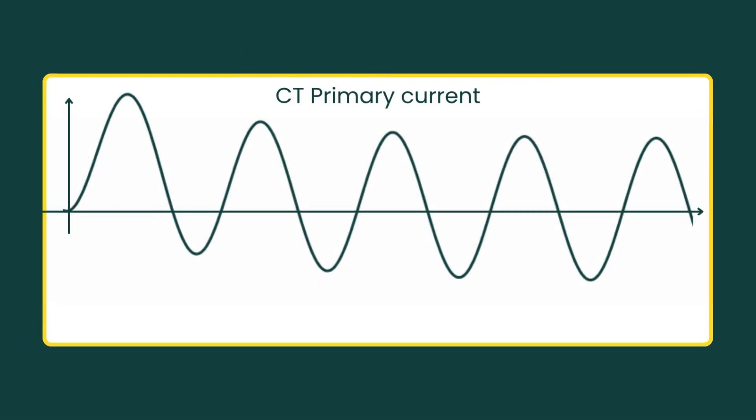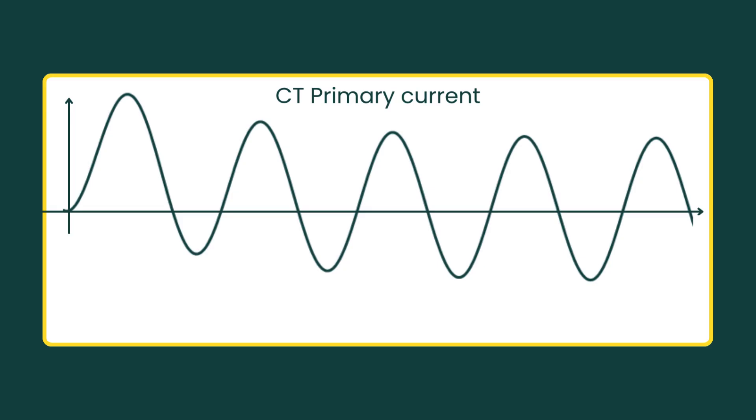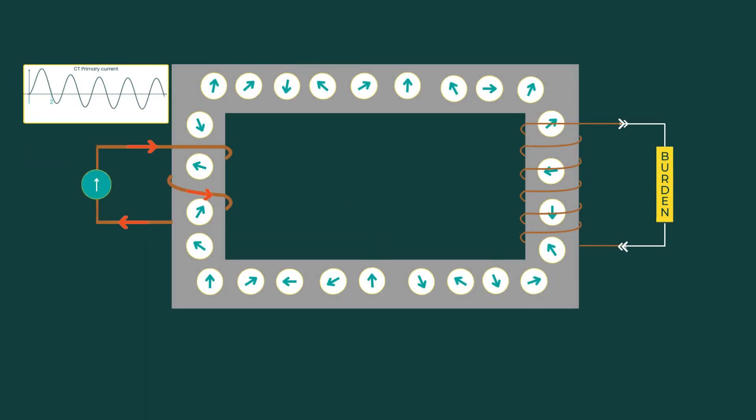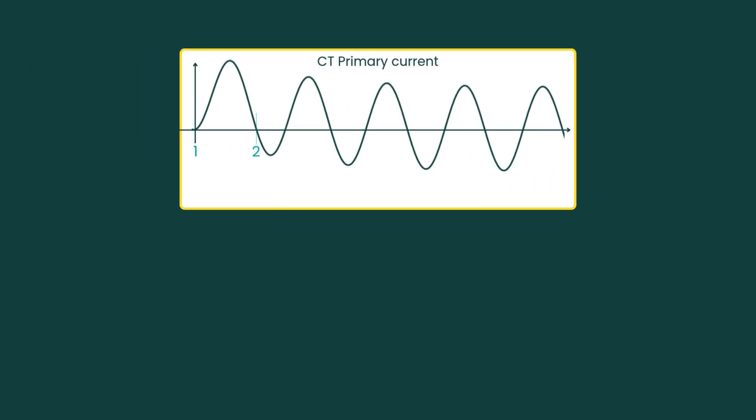Now let's walk through the first few cycles and see what happens inside the CT during those early moments. During the first positive half cycle, from point 1 to point 2, the current is positive and the dipoles in the core begin lining up in the positive direction. The flux is changing, so the CT works as expected; the secondary current follows the primary current, scaled by the CT ratio.